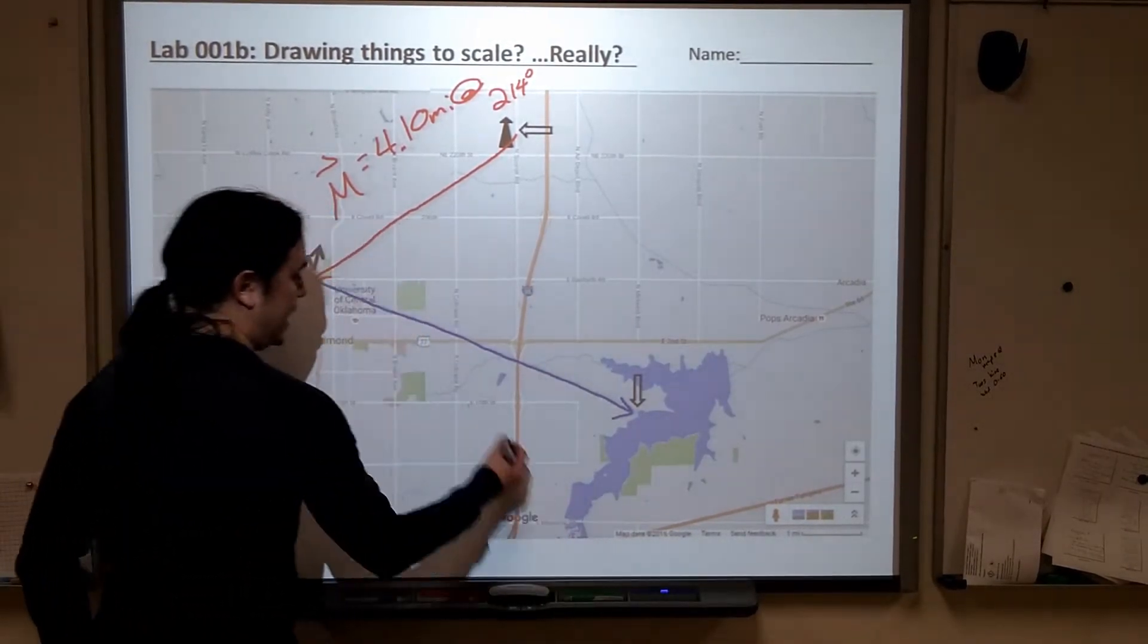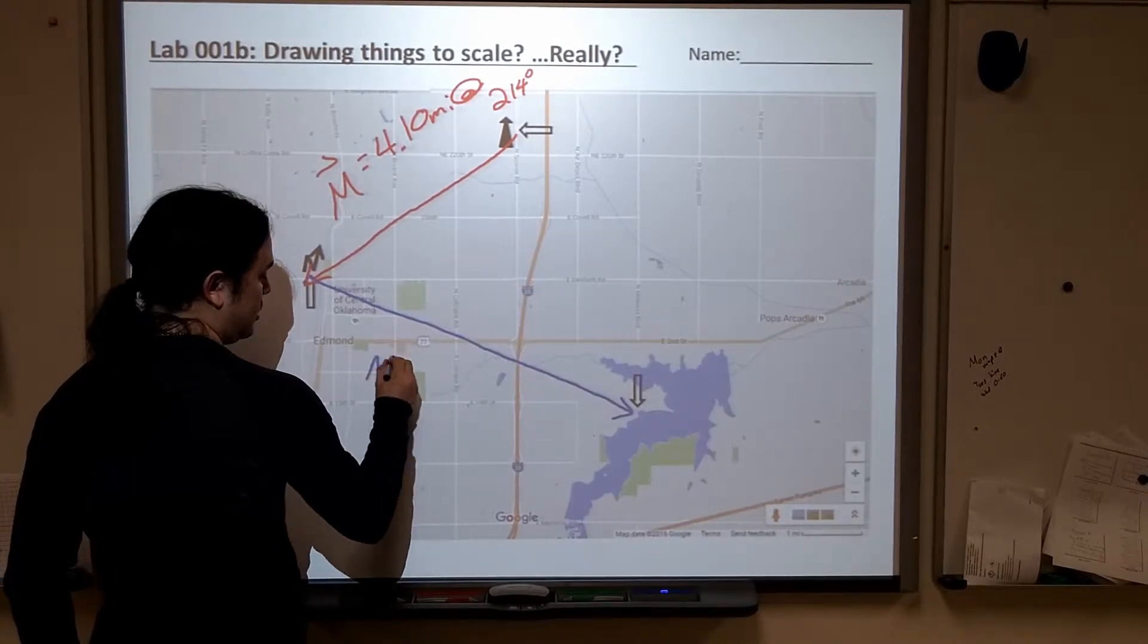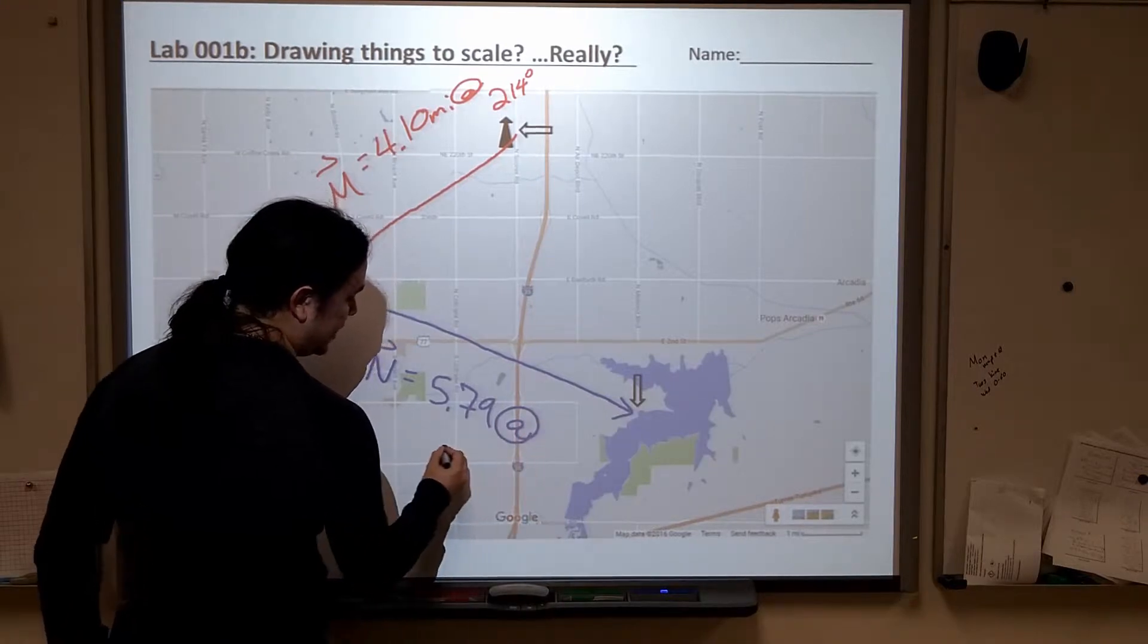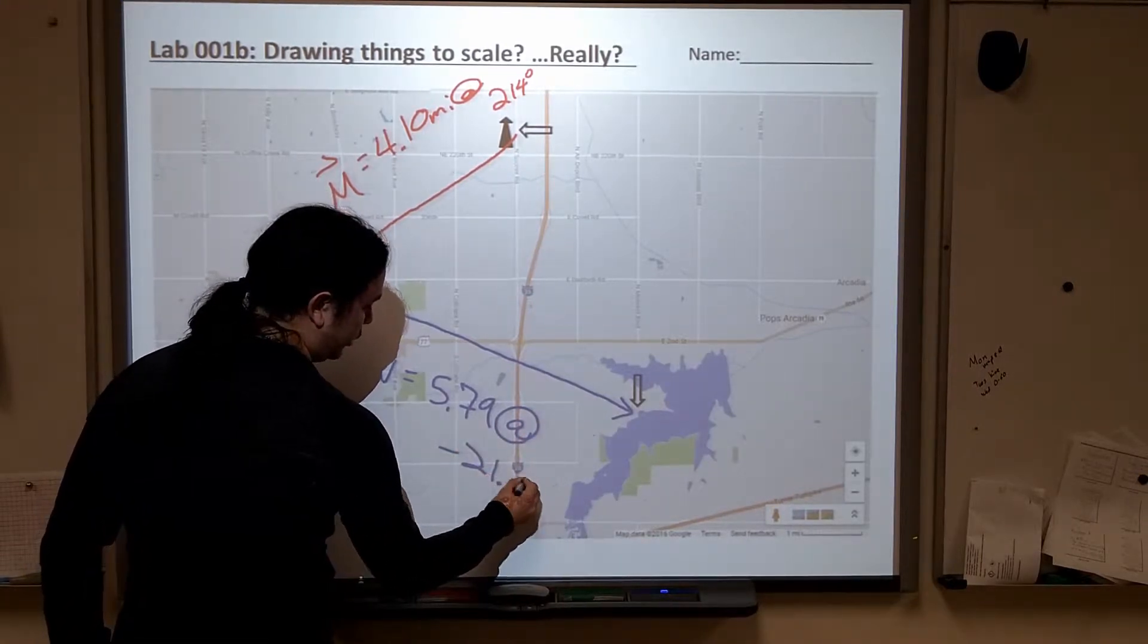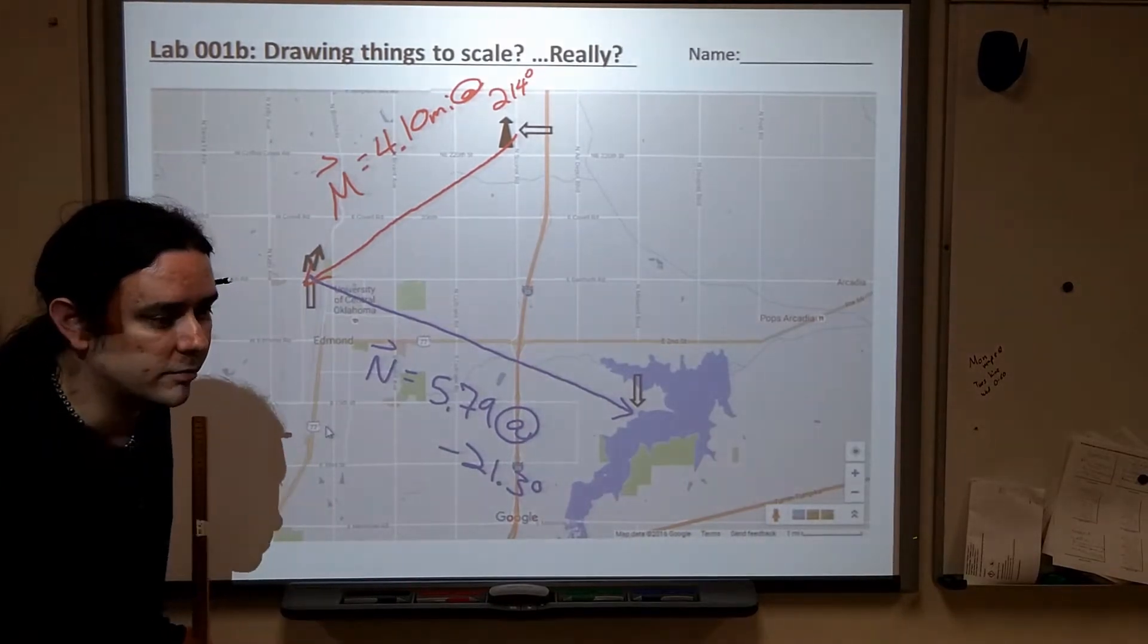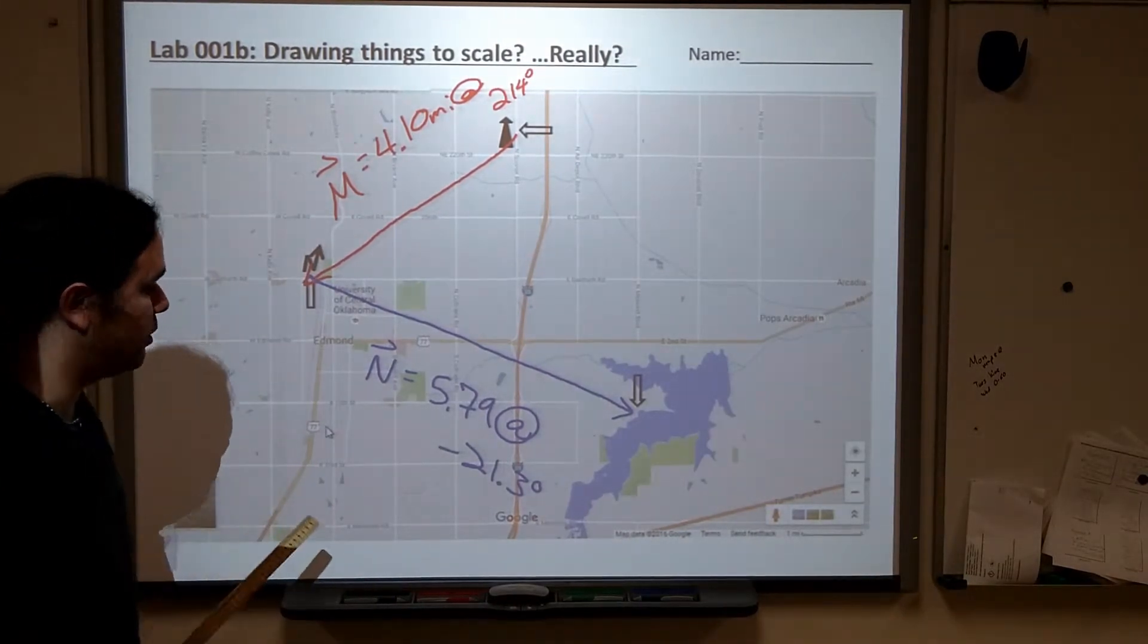Then we also predicted vector N as best I can on this. Again, it's difficult for me to do this because if I put the meter stick on the smartboard, then it thinks that I'm writing there. That won't happen on real paper, so you'll be able to do that. Then we found vector N, which is N should be equal to something like 5.79 at negative 21.3 degrees. I don't think I still have my note card here. We'll double-check that in just a moment.